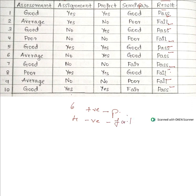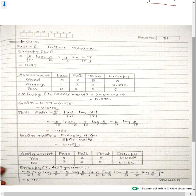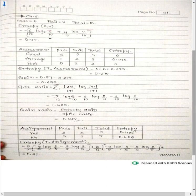We compute the entropy the same way as in ID3. With 6 pass and 4 fail out of 10 total instances, we apply the entropy formula: minus (6/10) log(6/10) minus (4/10) log(4/10). Computing this gives an overall entropy of 0.97. This is the overall entropy of the tree.